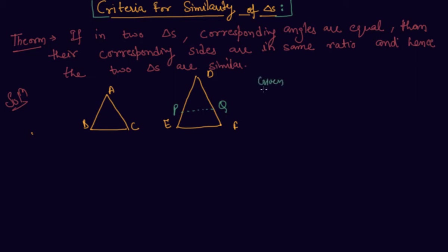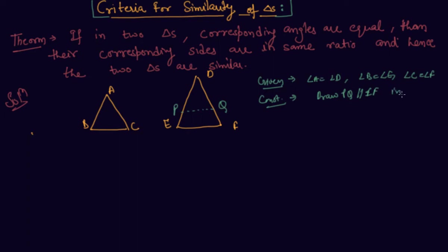What is given to us: corresponding angles are equal, meaning angle A equals angle D, angle B equals angle E, and angle C equals angle F. Construction: draw line PQ parallel to EF in which DP equals AB and DQ equals AC.